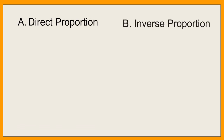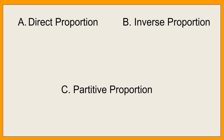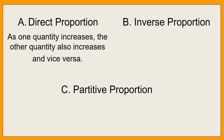We have three types of proportion. We have direct proportion, inverse proportion, and partitive proportion. Direct proportion says that as one quantity increases, the other quantity also increases and vice versa.